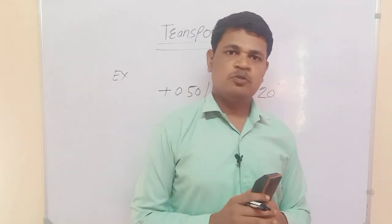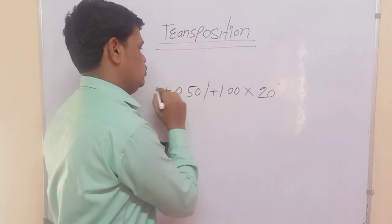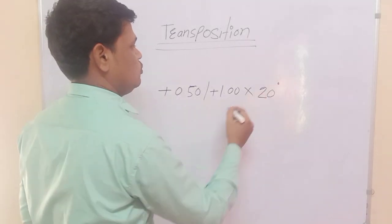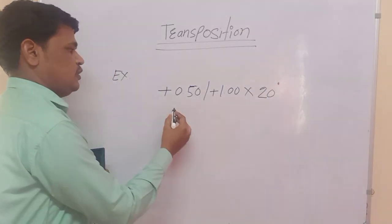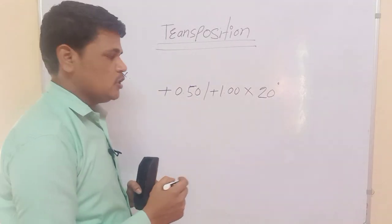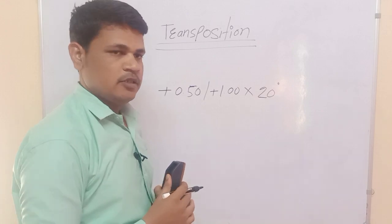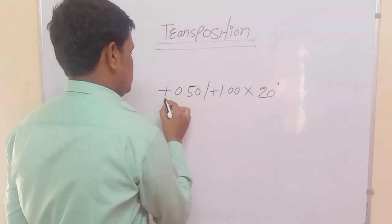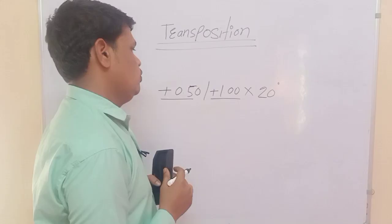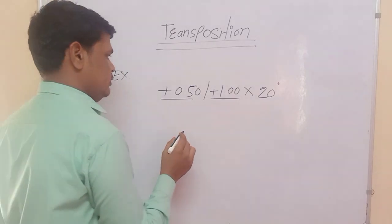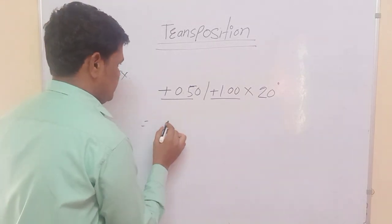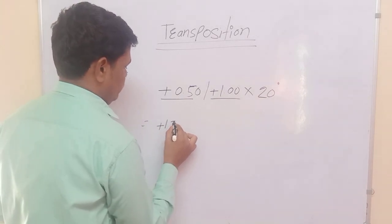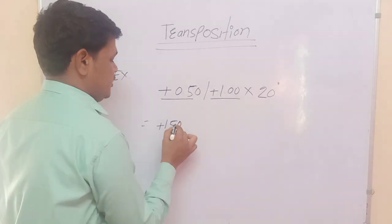Now we will transpose a given example using these rules. Example: +0.5 diopter sphere, +1 diopter cylindrical at 20 degrees. Applying rule one — add sphere plus cylindrical: +0.5 plus +1 equals +1.5. So the new sphere power is +1.5 diopters.